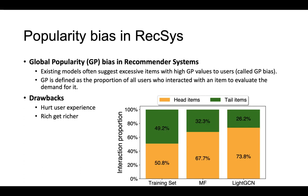Global popularity bias means existing models often suggest excessive items with high global popularity values to users. Here, global popularity means the proportion of all users who interacted with an item, used to evaluate the demand for it. As we all know, popularity bias has some drawbacks — it may hurt user experience and it will make the rich get richer.